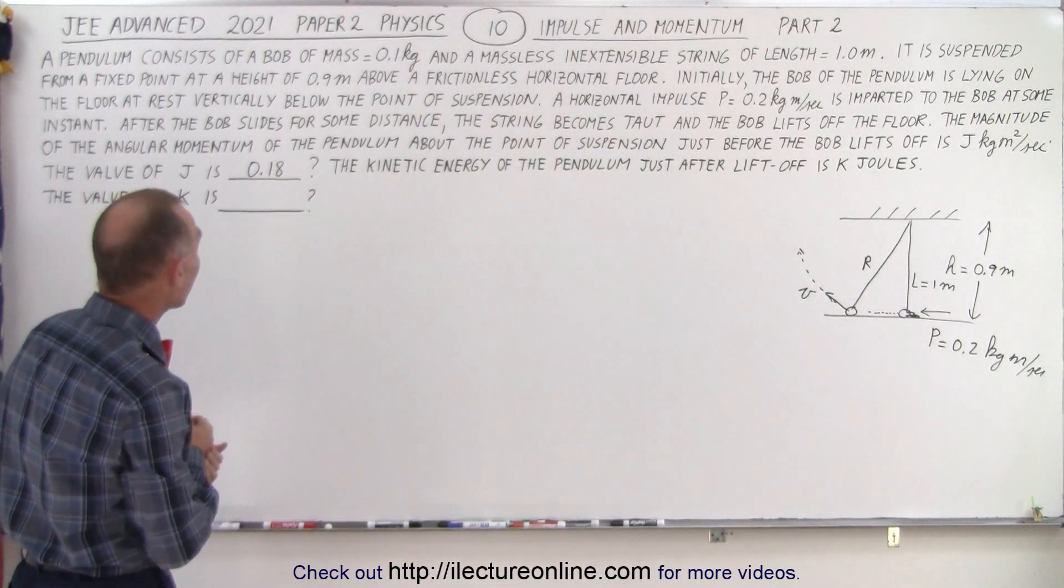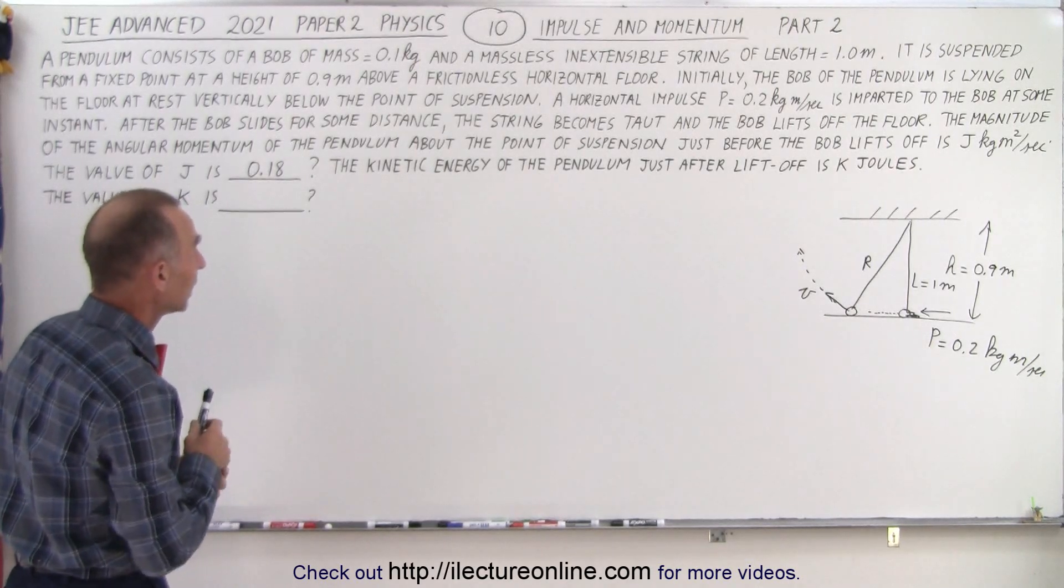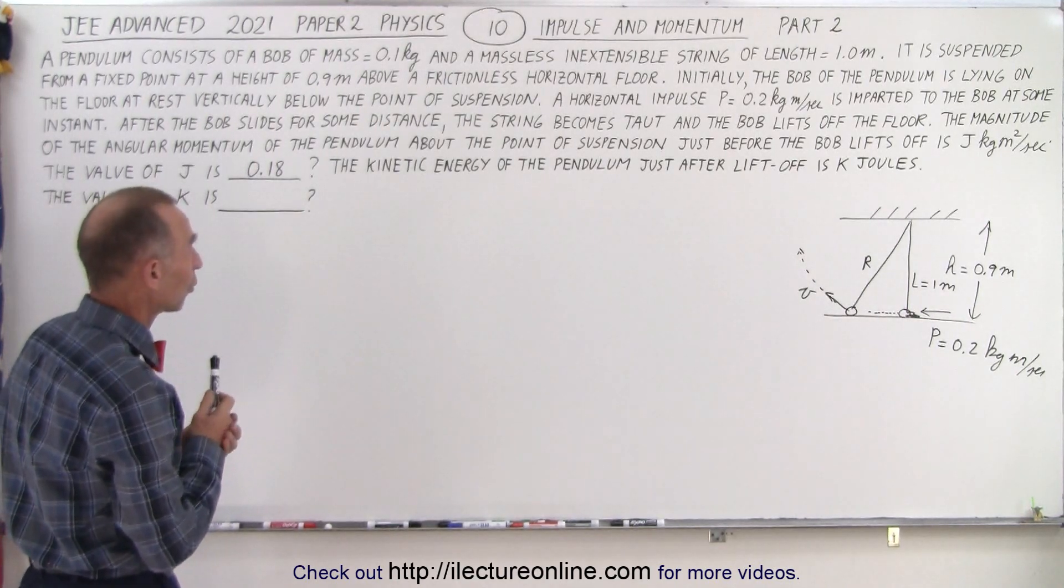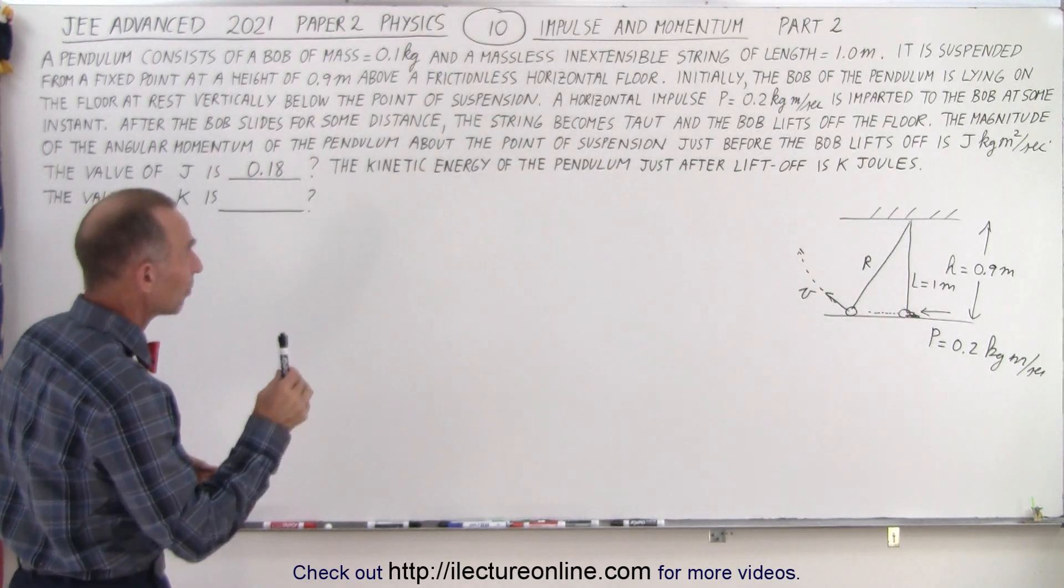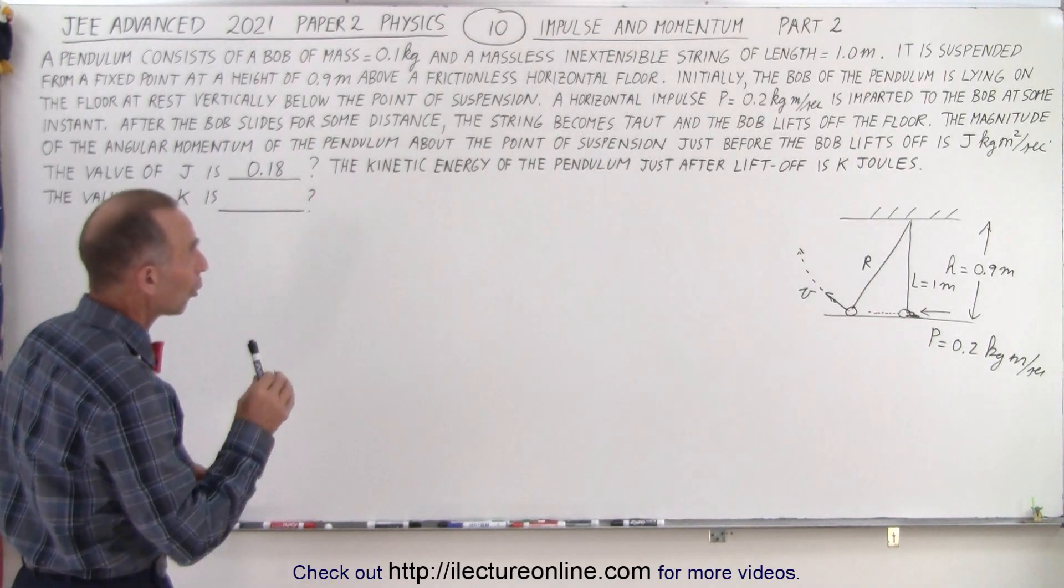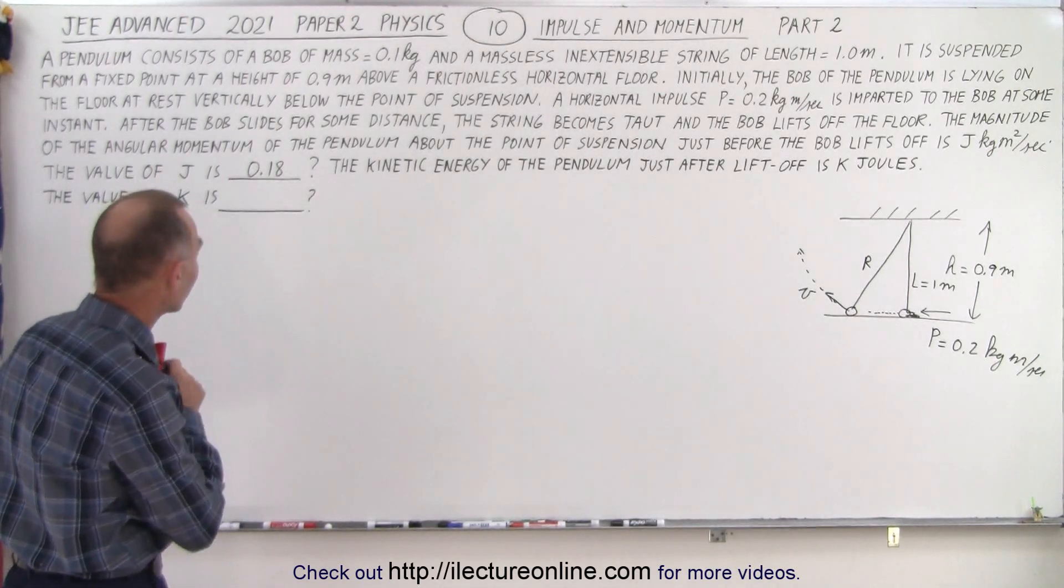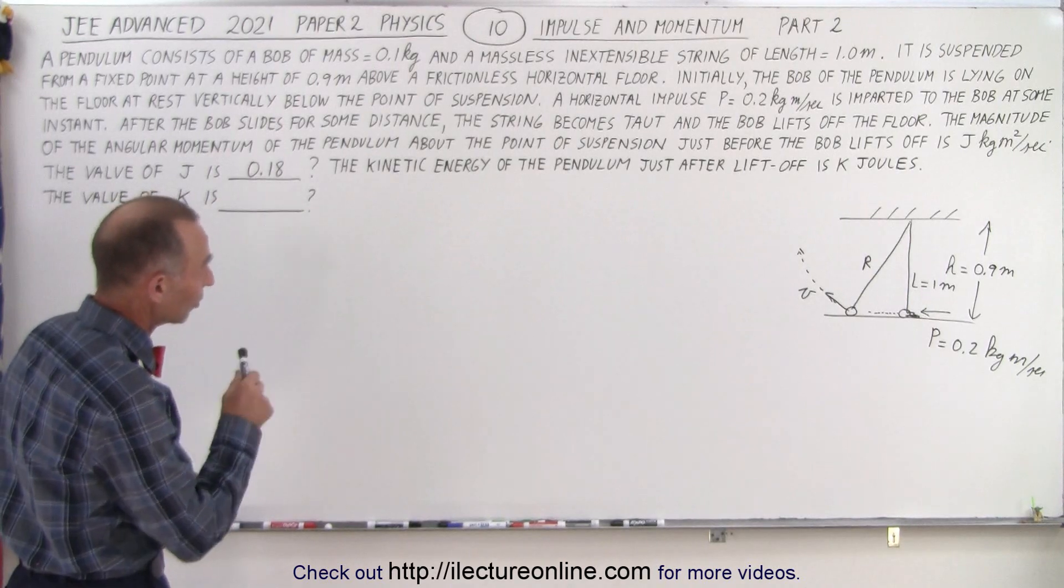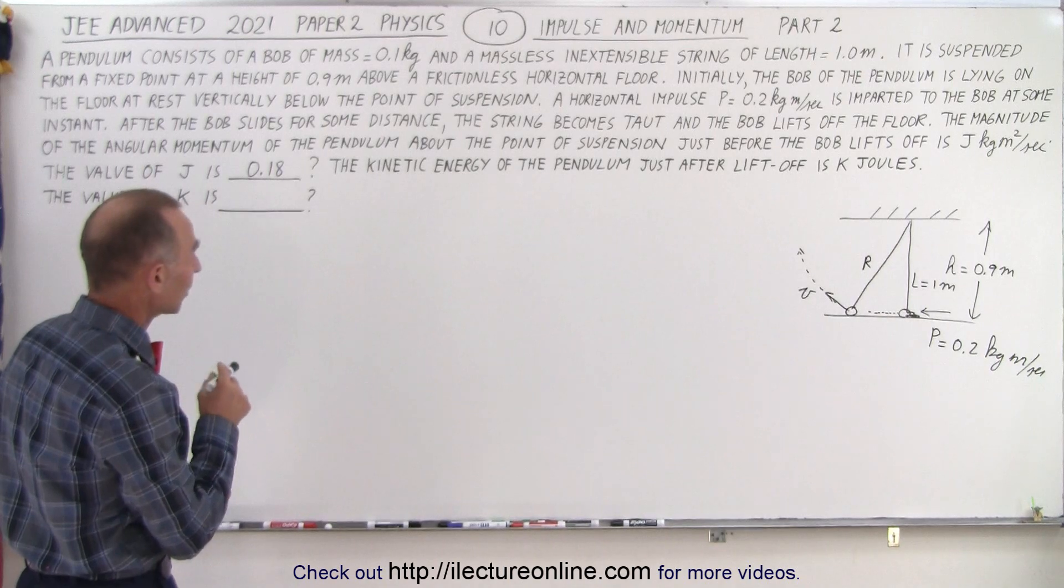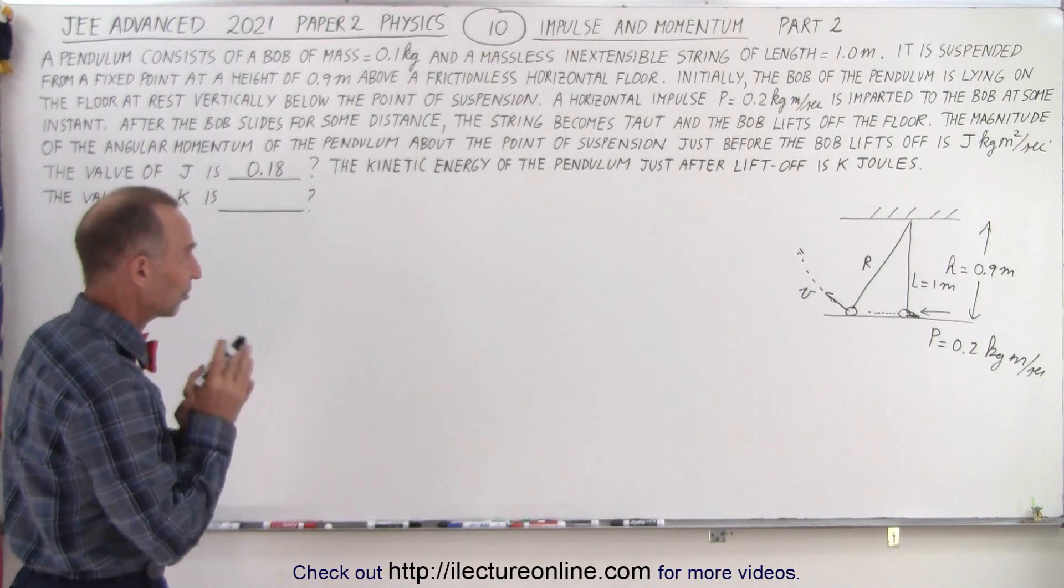Let's read the problem again just to remind ourselves what the problem was about. A pendulum consists of a bob of mass 0.1 kg and a massless, inextensible string of length 1 m. It is suspended from a fixed point at a height of 0.9 m above a frictionless horizontal floor. Initially, the bob of the pendulum is lying on the floor at rest vertically below the point of suspension. A horizontal impulse is imparted to the bob at some instant. After the bob slides for some distance, the string becomes taut and the bob lifts off of the floor. The magnitude of the angular momentum of the pendulum about the point of suspension just before the bob lifts off is j kg m² per second.